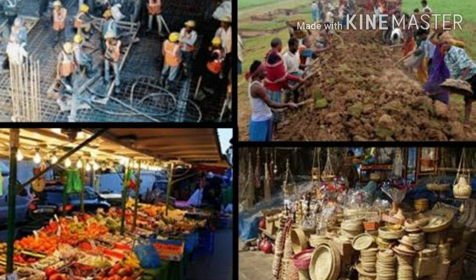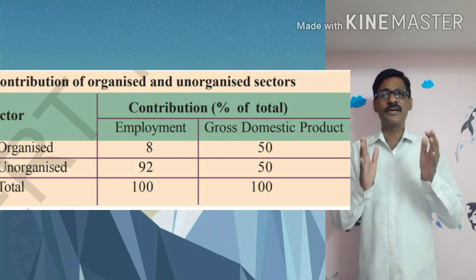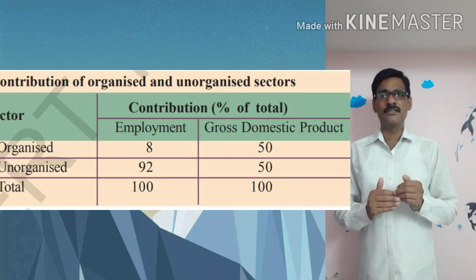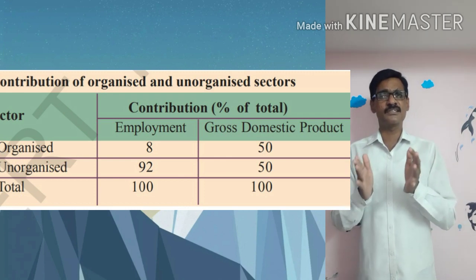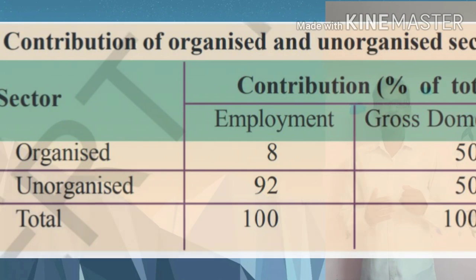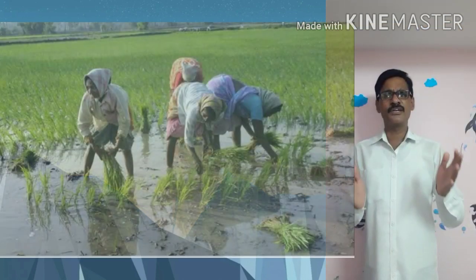Let us examine how the organized and unorganized sectors contribute to the GDP. A table shows the contribution of both sectors in 2005. In the organized sector, only 8% of workers are engaged but they are contributing 50% to the GDP. In the unorganized sector, 92% of workers are engaged but they are also contributing only 50% to the GDP. This shows the stark difference between the two sectors.